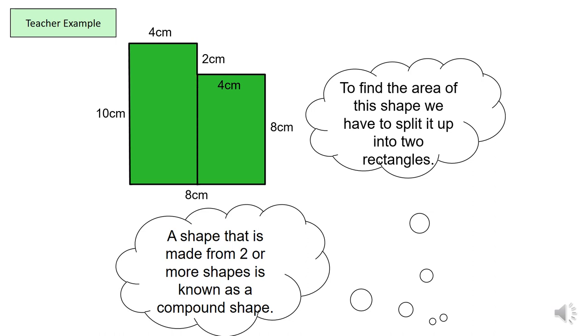So we've split it this way and now we are just focusing on working out the area of each of those shapes that have been split or each rectangle. So the first one, we've got an area of 4 times 10 which will give us 40 centimeters squared. And the second one, we are going to use 8 times 4 which will give us 32 centimeters squared.